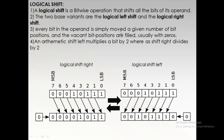Every bit in the operand is simply moved a given number of bit positions, and the vacant bit positions are filled with zeros. Every bit is transferred and moved to the next position, and the vacant position is filled with zero.